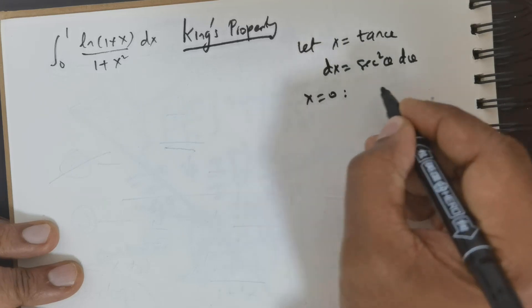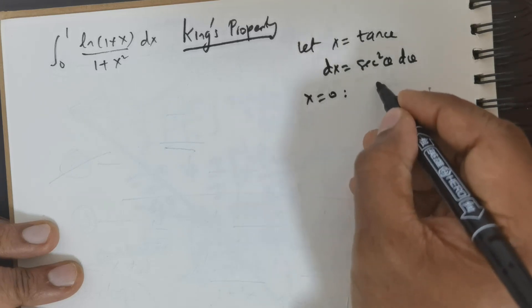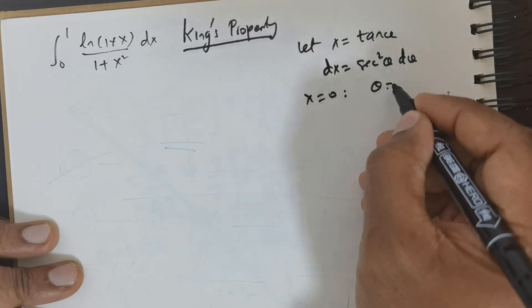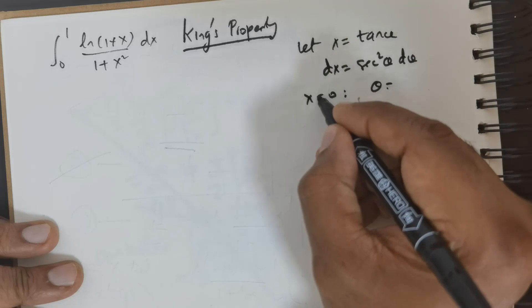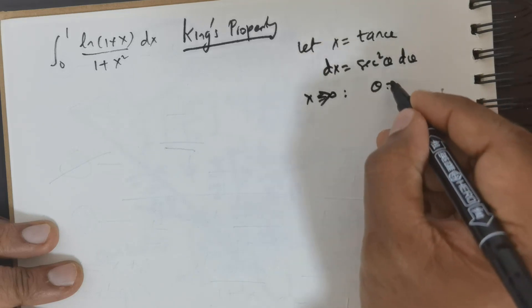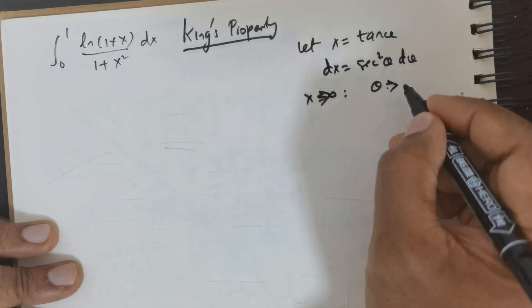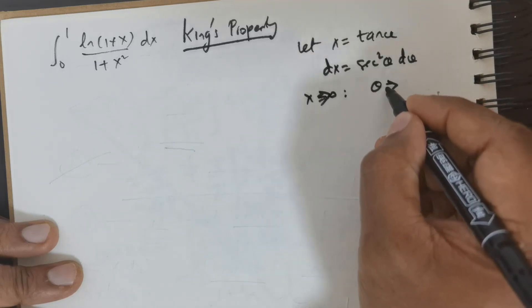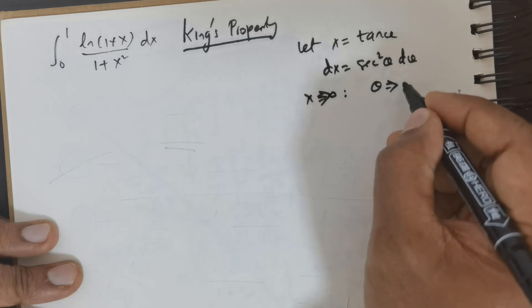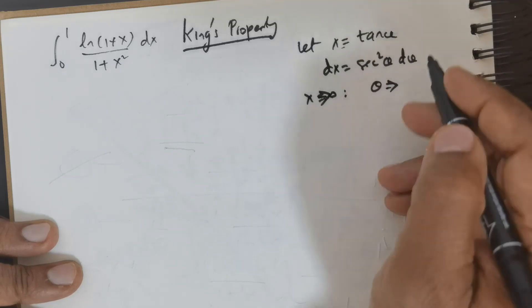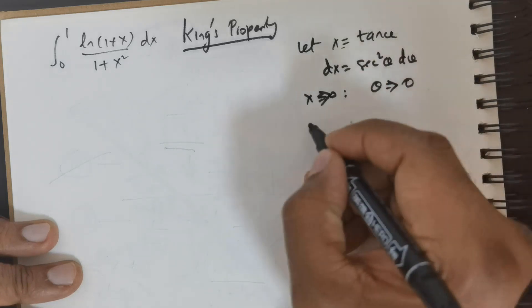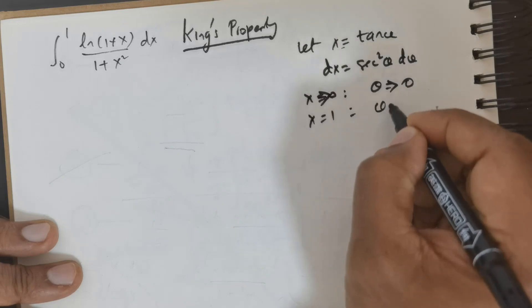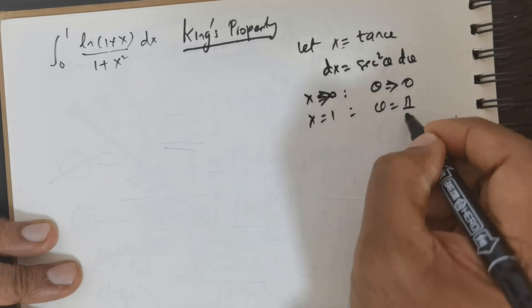Now when x is equal to 0, θ will be equal to 0. When x is equal to 1, θ is equal to π/4.